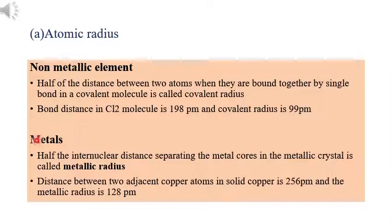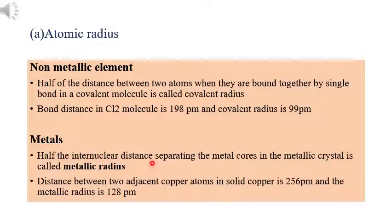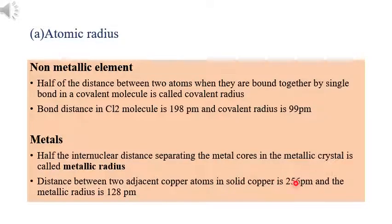In the case of metallic radius, it is similar but applies to metals in a crystal. The metallic radius is defined as half the internuclear distance between the metal cores in the metal crystal. For copper atoms, the distance between two copper atoms is 256 picometers, so the radius is half of that — 128 picometers.